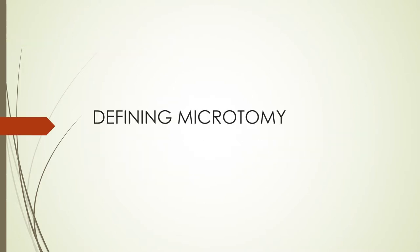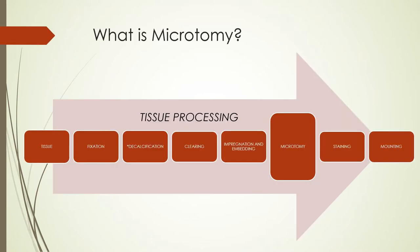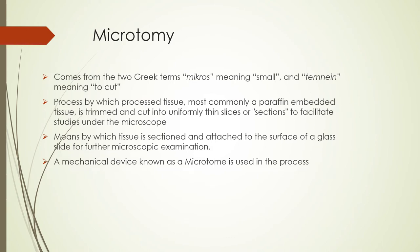So let's define microtomy. Going back to the tissue processing phases, we started off with a tissue and then did things like fixation, decalcification, clearing, impregnation, and embedding. And now we're on to microtomy. It came from the two Greek terms 'micros' and 'tomain,' meaning small and to cut — so it practically means cutting something small. It is the process by which tissue is trimmed and cut into uniformly thin slices to facilitate studies under the microscope.